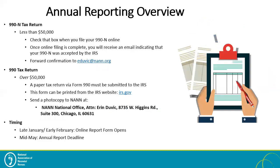If your gross receipts are less than $50,000, please select that box when you file the 990 online. Once your filing is complete, you will receive an email indicating the confirmation. Please forward that email to my attention, as I will need that confirmation in order to be compliant. The 990N can be completed online if your gross receipts are less than $50,000. You will receive an email confirmation once your online submission is complete, and I would just need you to forward me that email.